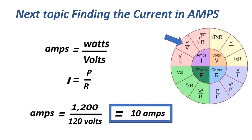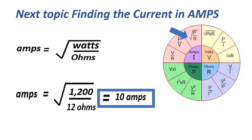The next current formula: amps equals watts over volts, or I equals P over V, equals 10 amps. And the next formula: amps equals the square root of watts over ohms, which also equals 10 amperes.